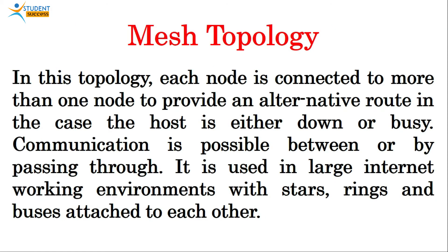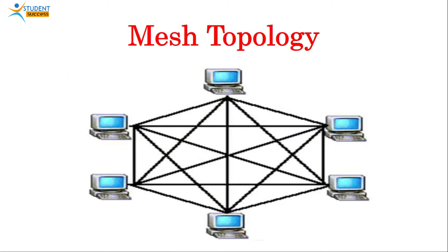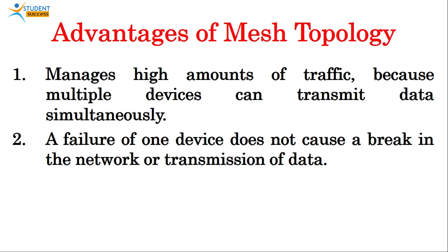Next is mesh topology. In this topology, each node is connected to more than one node to provide an alternative route in case a host is either down or busy. It is used in large internetworking environments like stars, rings, and buses attached to each other. In mesh topology, each node is connected to every other node in the network. Advantages: it manages high amounts of traffic because multiple devices can transmit data simultaneously.